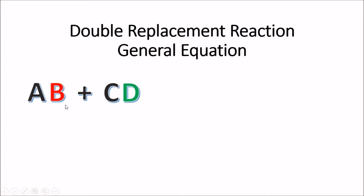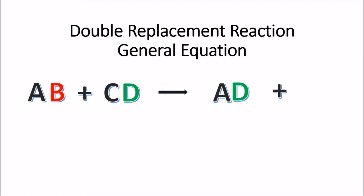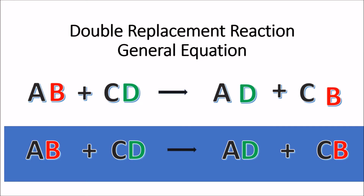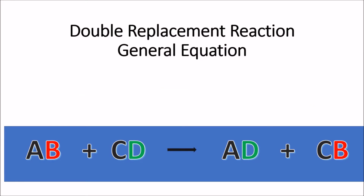So, the double replacement reaction general equation. We have AB plus CD. A is the positive ion and B is the negative ion. C is also positive, and D is negative. They will change partners — the positive ion A will partner with D, and C will partner with B. So the general equation for double replacement reaction is: AB + CD yields AD + CB.